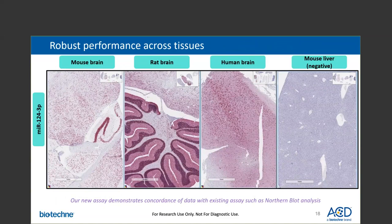We observed high microRNA-124 detection in FFPE normal adult mouse, rat, and human brain tissue. On the other hand, the mouse liver is a known negative tissue, and here we show no microRNA-124 detection. This data demonstrates our new assay's specificity, as well as concordance with existing assays such as the northern blot analysis from the previous publication.